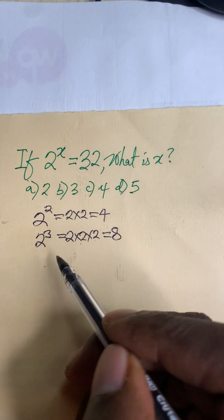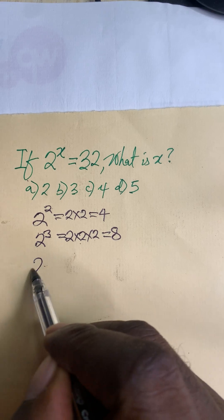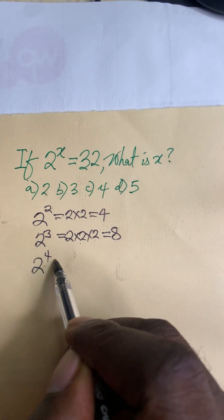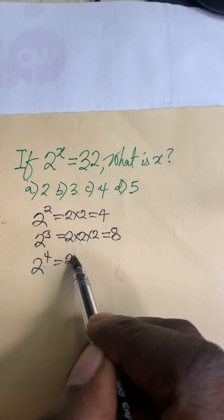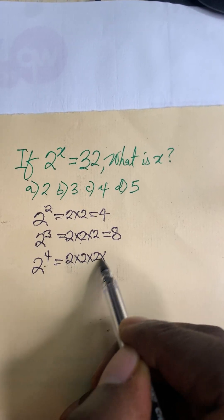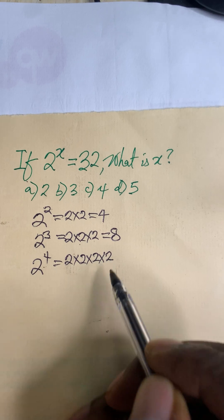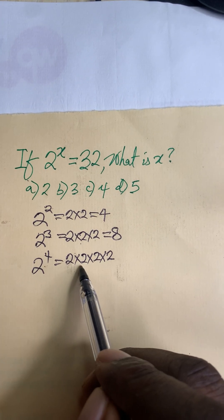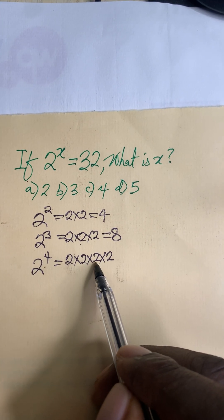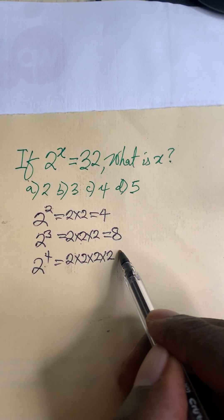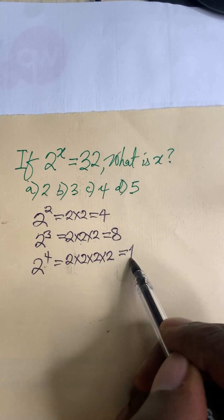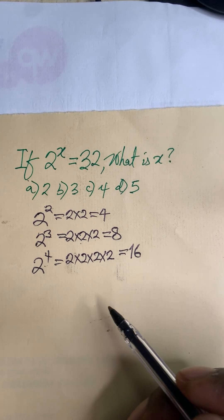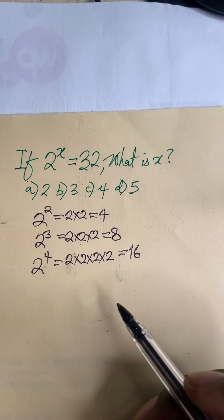So you try the next number after 3, which is 4. 2 to the power of 4 means 2 times 2 times 2 times 2. That's 4 times 2 = 8, then 8 times 2 = 16.